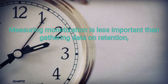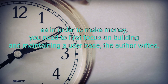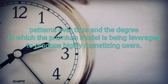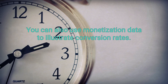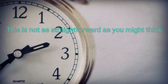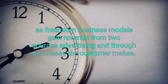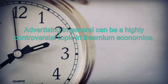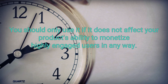Measuring monetization is less important than gathering data on retention, as in order to make money, you need to first focus on building and maintaining a user base. Monetization metrics communicate not only volume of revenue, but also crucial shifts in spending patterns over time, and the degree to which the freemium model is being leveraged to produce highly monetizing users. You can also use monetization data to illustrate conversion rates. Since freemium business models gain revenue from two sources — advertising and through purchases the customer makes — Sufert believes you should concentrate solely on purchases made by customers to gain accurate conversion rate data. Advertising should only be used if it does not affect your product's ability to monetize highly engaged users in any way.